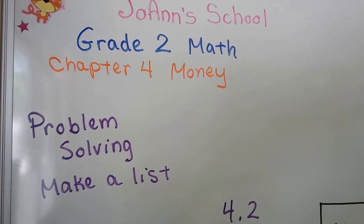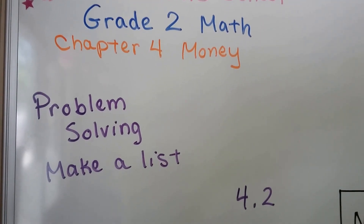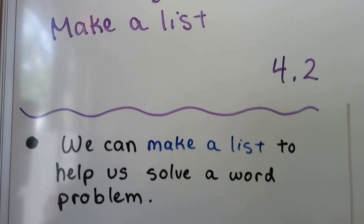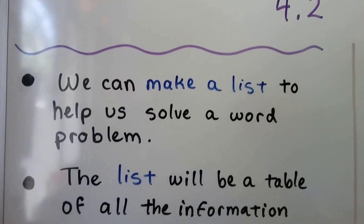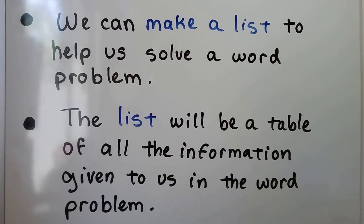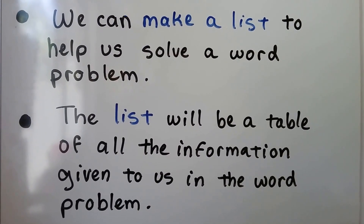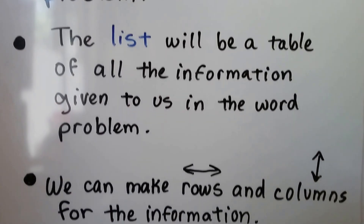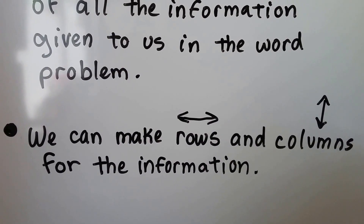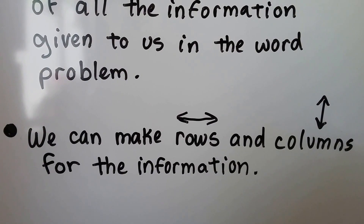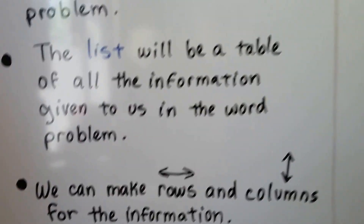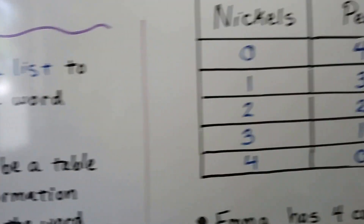Problem solving: making a list, lesson 4.2. We can make a list to help us solve a word problem. The list will be a table of all the information given to us in the word problem, and we can make rows — they go across — and columns — they go up and down — for the information.